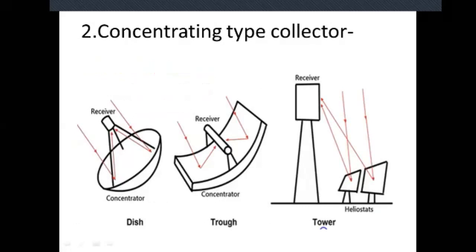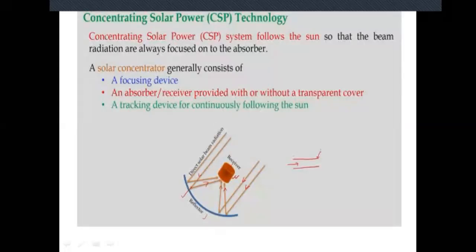For the next concentrating type collector, you can see various types of collectors here — these are the concentrating types. The name itself shows concentrating type, meaning solar radiation from the sun is concentrated or collected. Types include dish type, trough type, and tower type concentrated collectors. According to shape, names are given. Concentrating solar power technology follows the sun — it is a tracking system — so that beam radiations are always focused on the absorber.